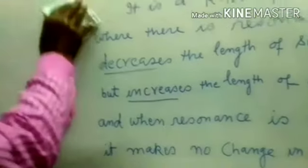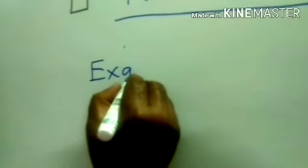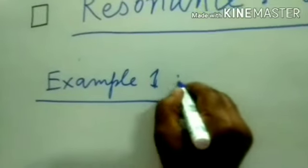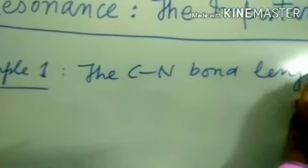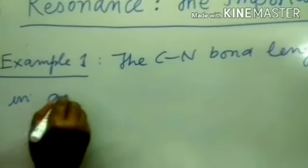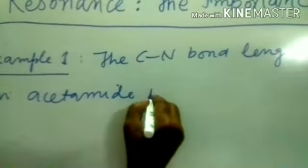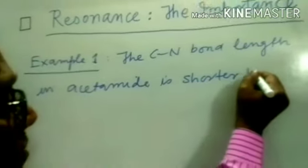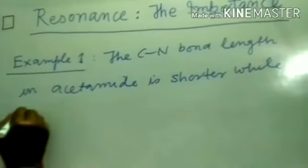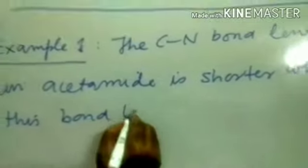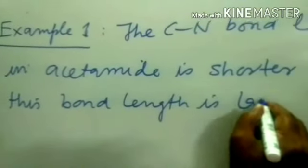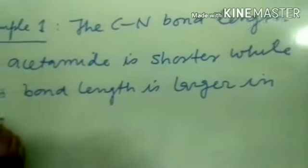Now see it with the help of examples. Example 1: The C-N bond length in acetamide is shorter, while this bond length is larger in ethylamine.